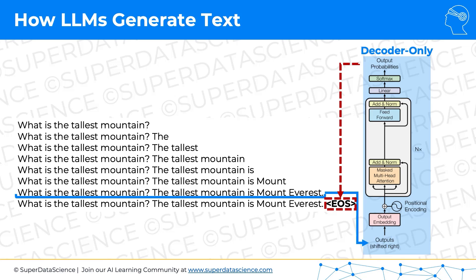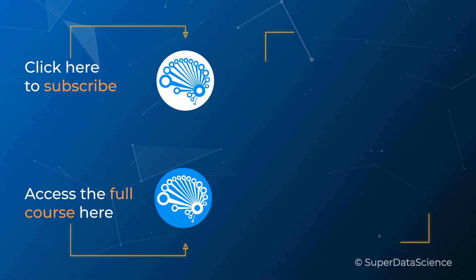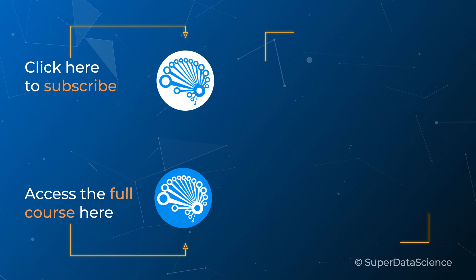So a key takeaway from this tutorial is that large language models use a decoder-only architecture — they don't use the full transformer. Also, they generate one word at a time, and then it's an iterative process until they get to the end-of-sequence token. Make sure to check out these videos on the right or the full course in the description to continue your learning, and I look forward to seeing you there.